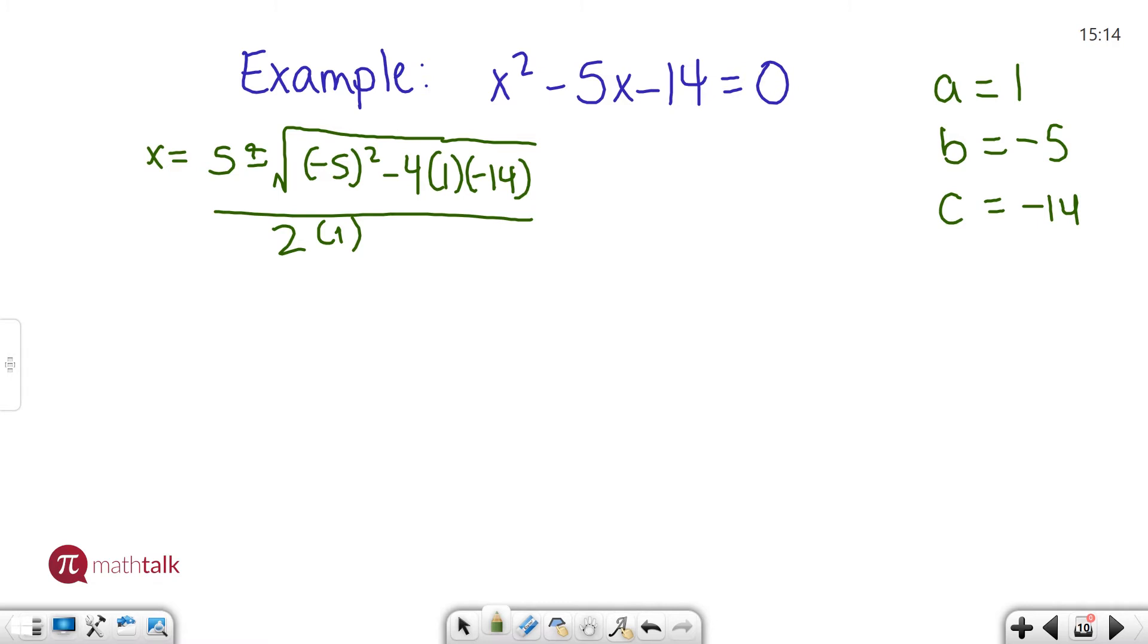So I'm going to go ahead and say x equals 5 plus or minus. Inside the square root negative 5 squared is 25. And negative 4 times 1 times negative 14 is actually positive 56. And then I have 2 on the bottom. Now we can keep simplifying down. x equals 5 plus or minus. 25 plus 56 is 81. And 2 on the bottom.